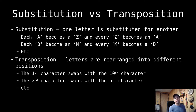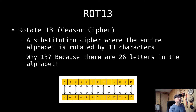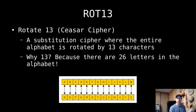We used ROT-13 where we said: anytime I see this character, I'm going to substitute this other character — a one-for-one match without moving characters around like transposition. ROT-13 was easy because the English alphabet has 26 characters. If we divide that in half we get 13, so every time I rotate 13 I end up back at the same character. If I start at 'A' and move 13 characters I get to 'N', and if I move 13 characters again I end up back at 'A'.